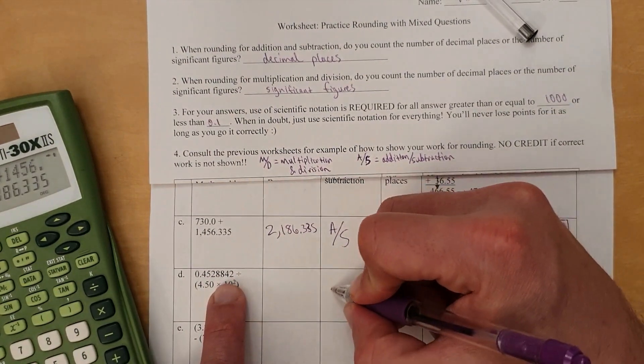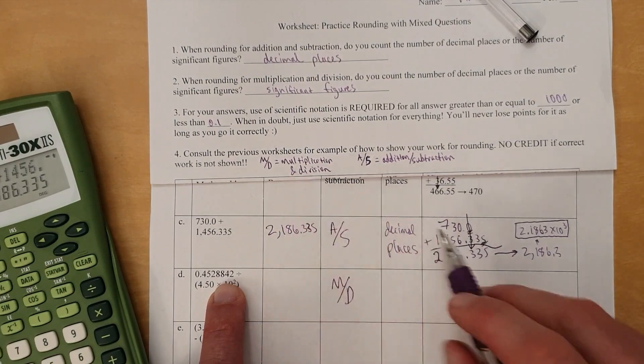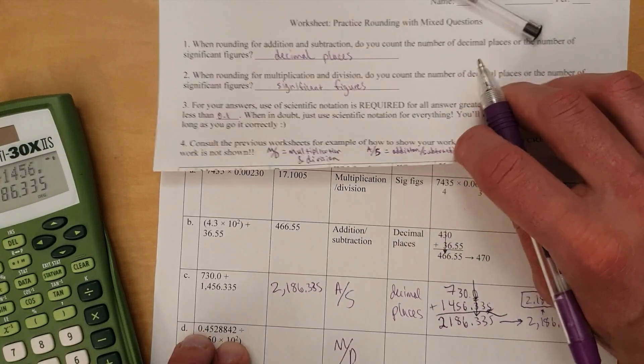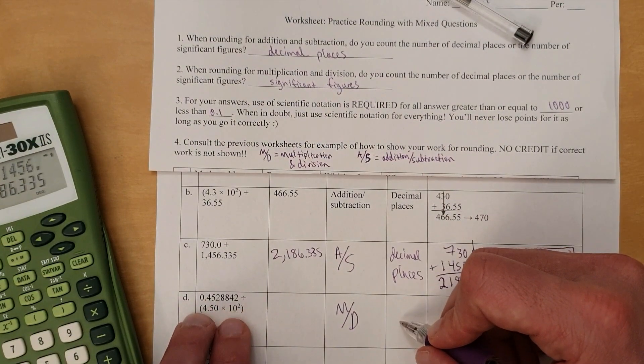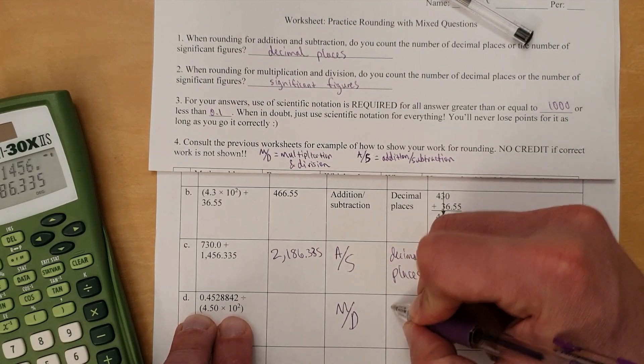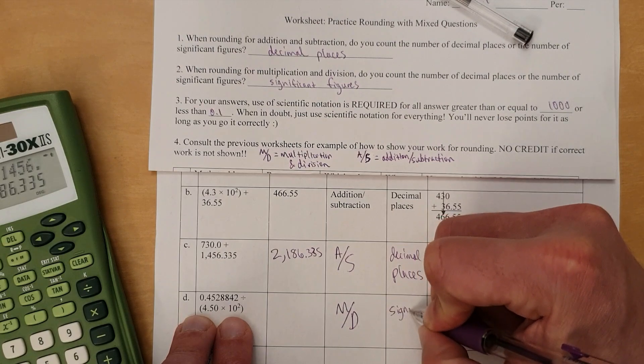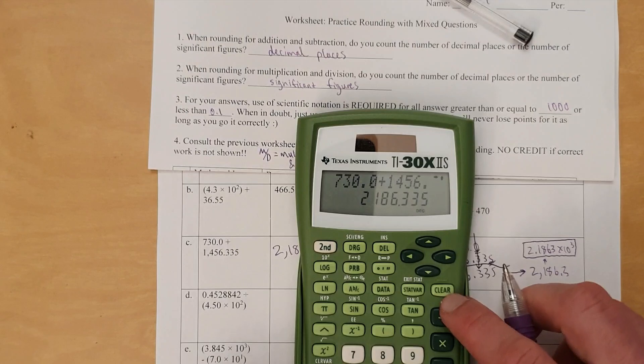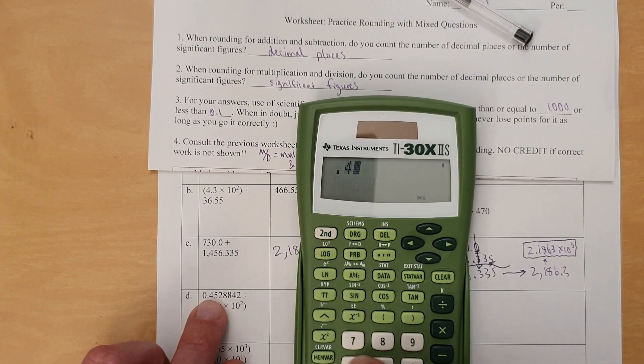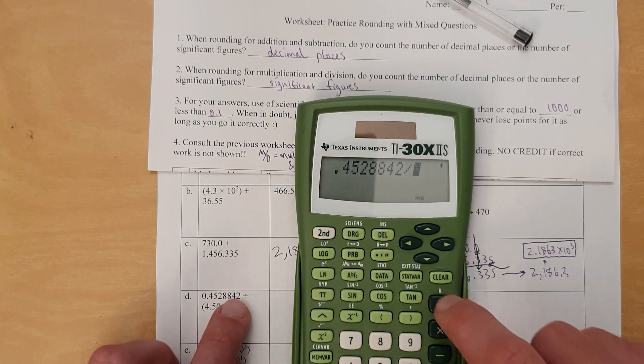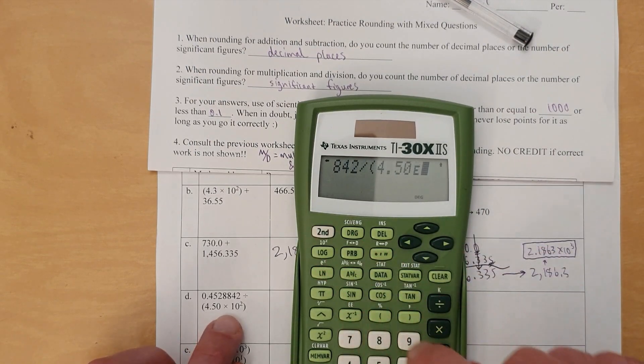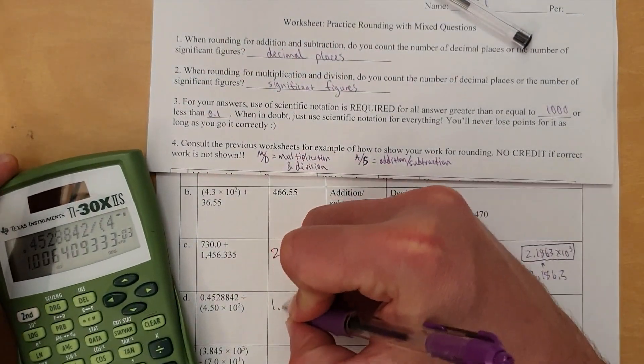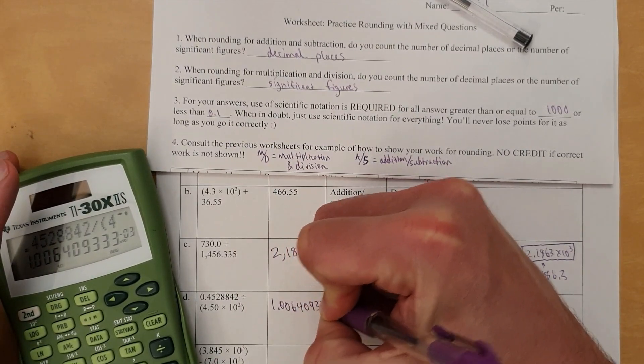All right, now this one, division. So we're obviously using our multiplication division rules. Again, I'm using the abbreviation I wrote a key for earlier. For what we're looking at, we're looking at the number of sig figs. This determines how we round. So let's do the math. 0.4528842 divided by, in parentheses, 4.50 times 10 to the second. And we get that. And we should for sure put that in scientific notation. 1.006409333 times 10 to the negative third.